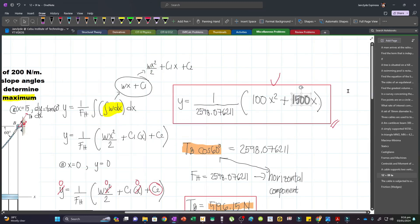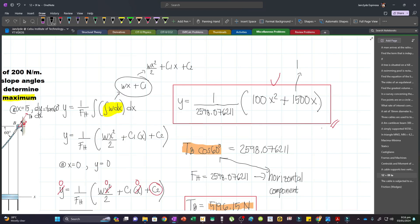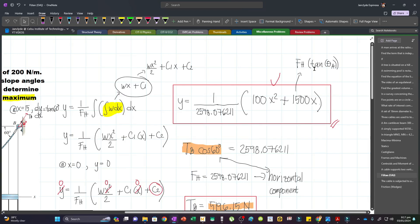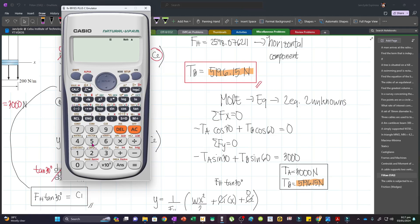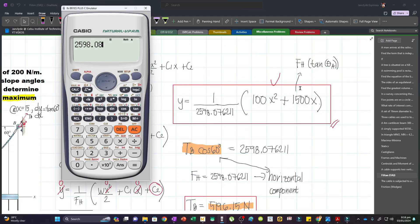And then for this value, this is just obtained using FH and then times the tangent of the angle at A. Again, our FH was 2598.08. So to get this value, we have to multiply FH by the tangent of the angle at A.